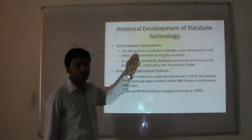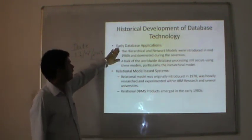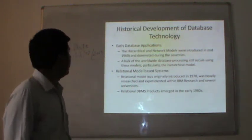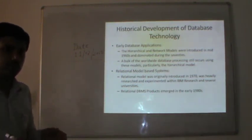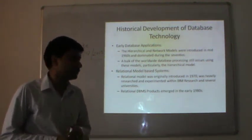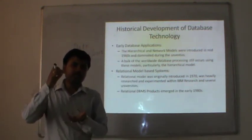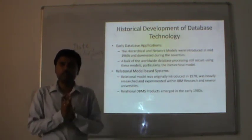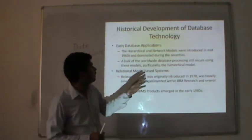Historical development of database technology: here we see how the evolution of databases took place. Early database applications: the hierarchical and network models were introduced in the mid-1960s and dominated during the 1970s. We are still using hierarchical database systems in most applications. In hierarchical models, there are parent-child relationships — one parent with children at the next level. Windows XP is designed on the concept of hierarchical. For network models, there were different relationships — one-to-many relationships.